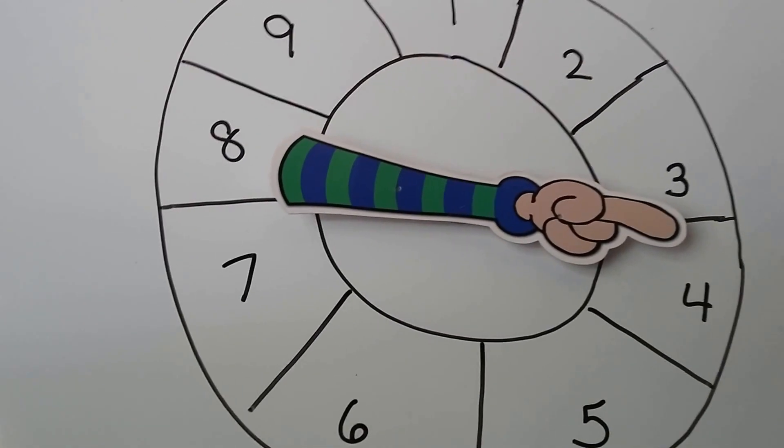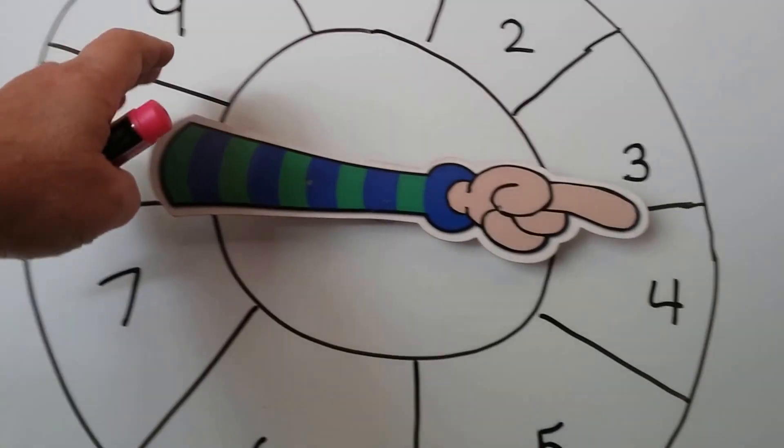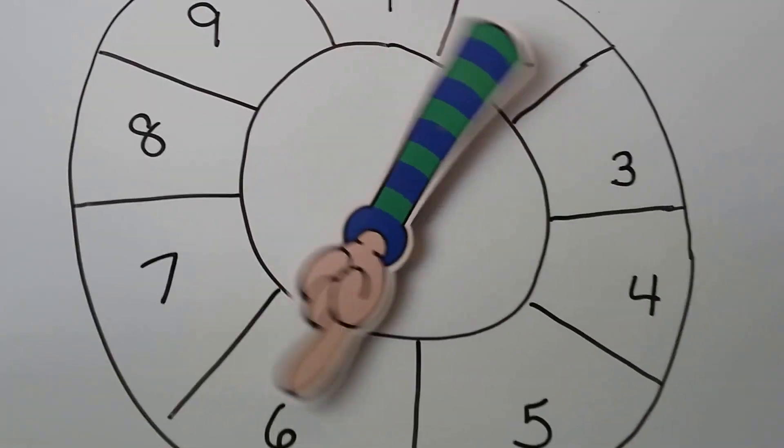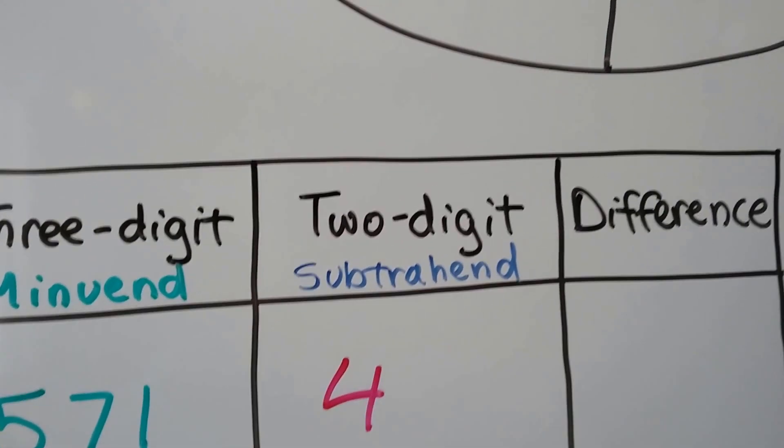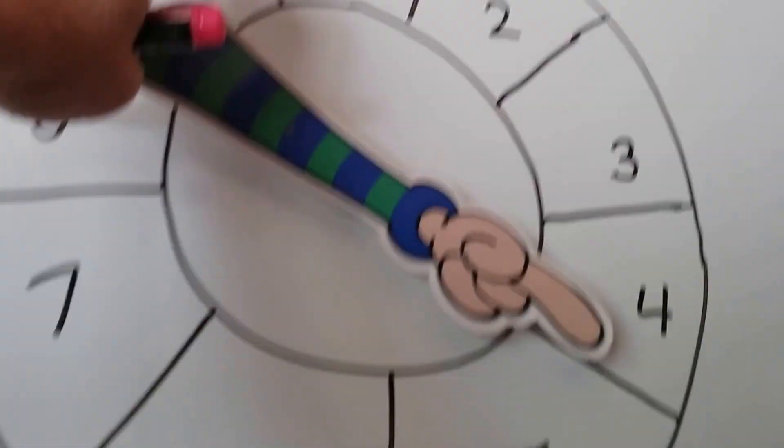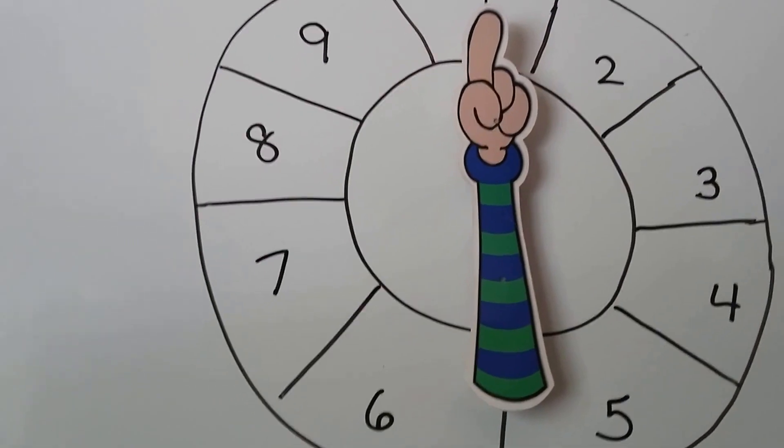So let's spin this 2 times and come up with a tens and a ones to be able to subtract. So we get a 4. That's going to be our tens. I'm going to spin it again, and we get a 1.